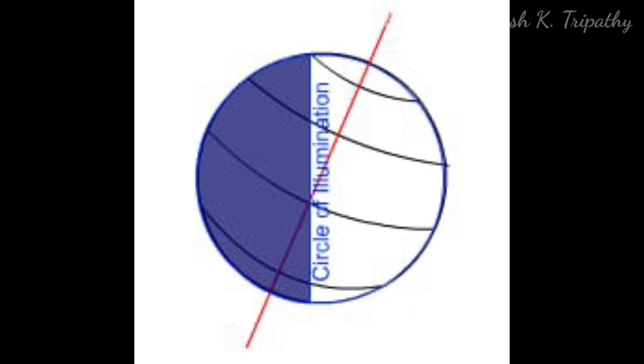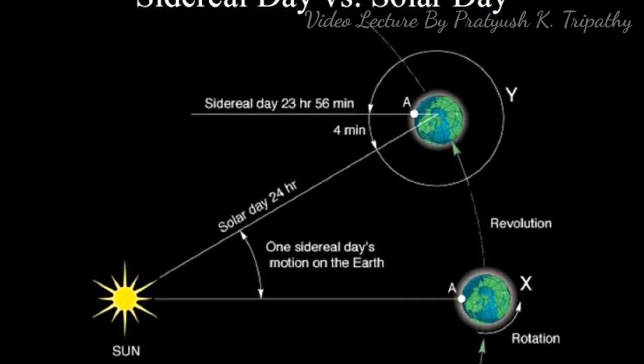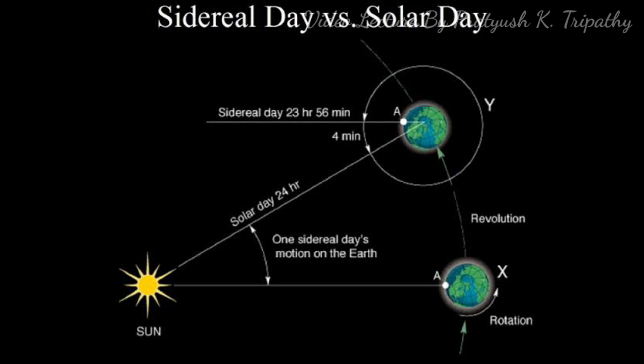The spinning of the Earth on its polar axis is termed as rotation. The period of rotation or the time required for the Earth to turn through 360 degrees is 23 hours 56 minutes 4.09 seconds. This period is termed as the sidereal day and is determined by the stars.